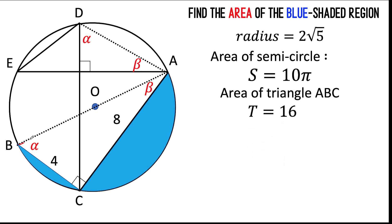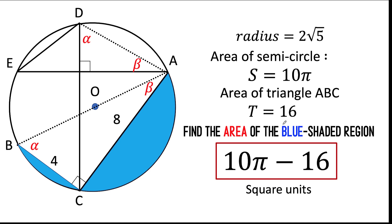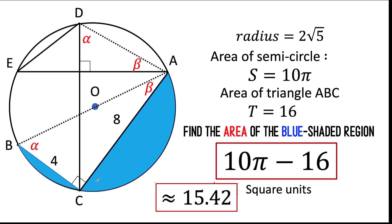We know the area of the semicircle and the area of the triangle. If we subtract these two values, what is left is the area of the blue shaded region, which is exactly what we want to find. So 10π minus 16 square units is the combined area of the two blue shaded regions, and this problem is now solved. This is indeed a very beautiful and elegant geometry question. Thank you very much, and we hope to see you again in our next video. Bye for now.